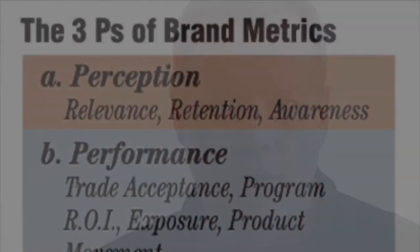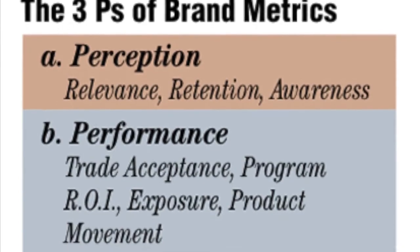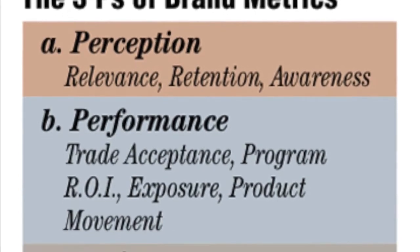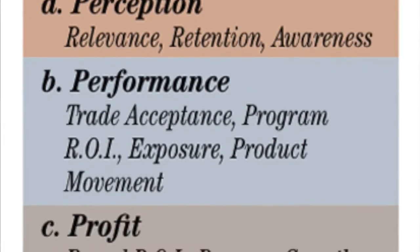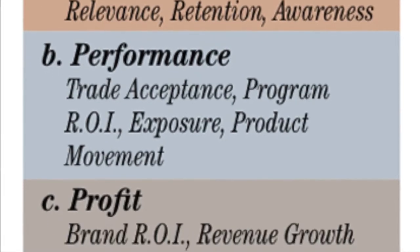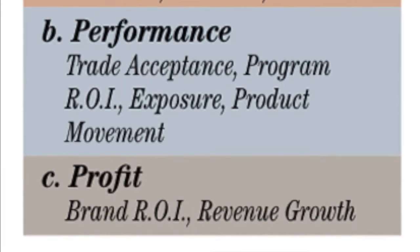The three P's of brand metrics. Perception — that's relevance, retention, and awareness. Performance — that's trade acceptance, ROI or return on investment, exposure, and product movement, and profit. These elements measure the intangible aspects of the brand.